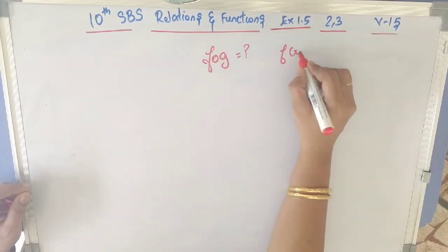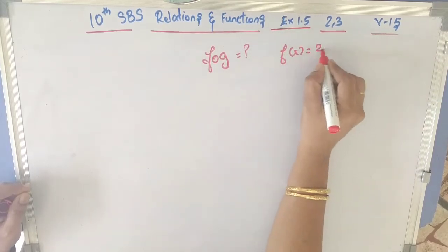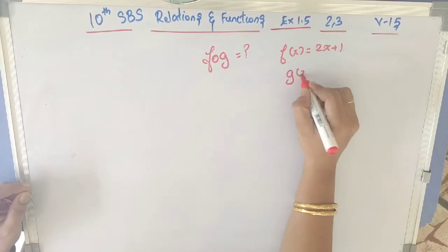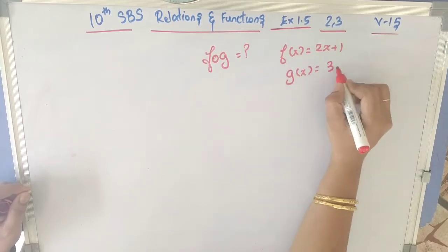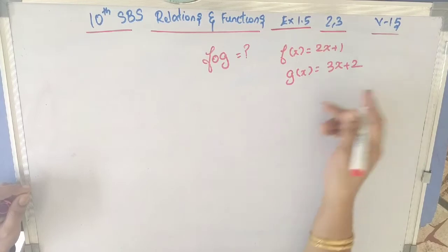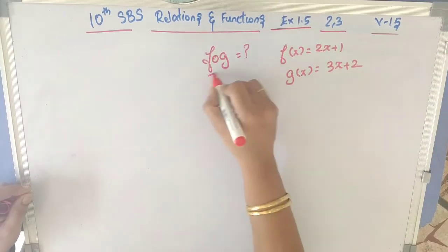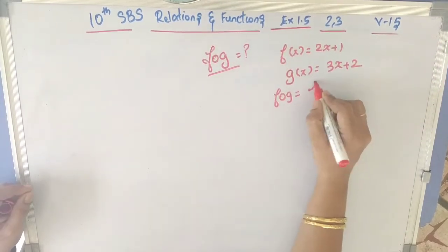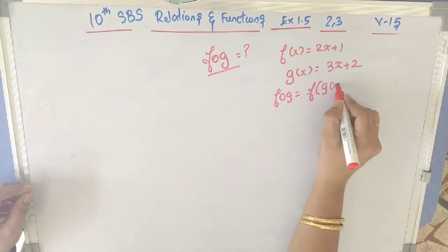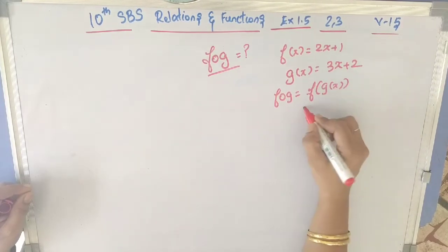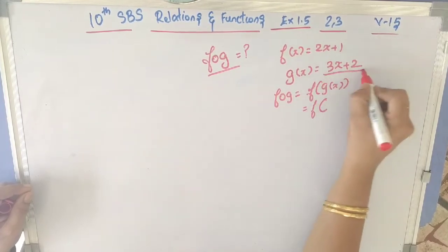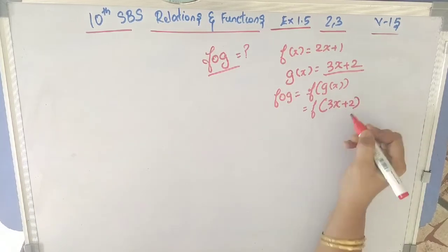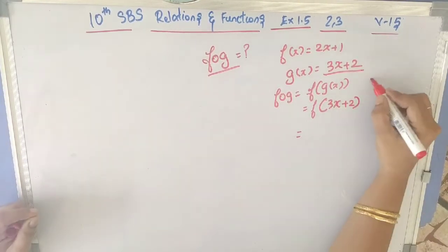Let's take f(x) = 2x + 1 and g(x) = 3x + 2. We have to find f∘g. What is f∘g? It is f of g of x, which means f(3x + 2).